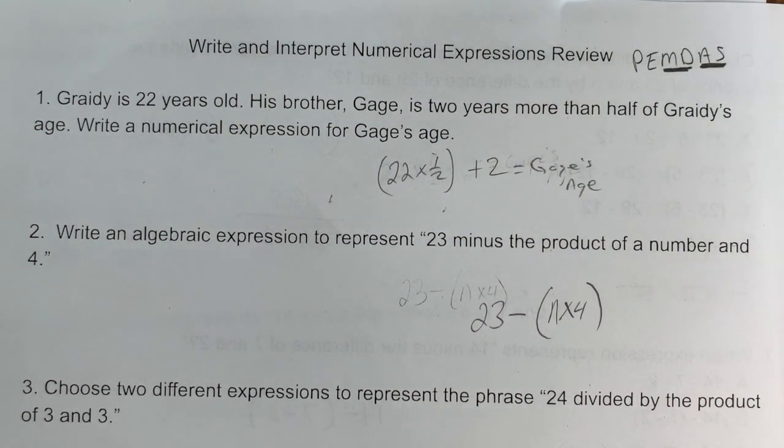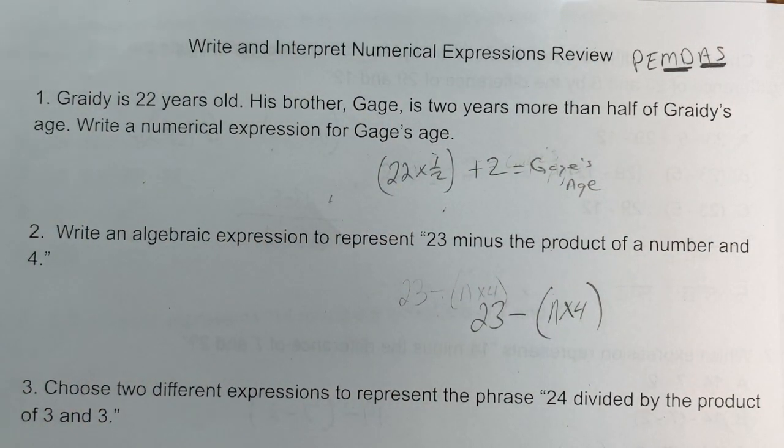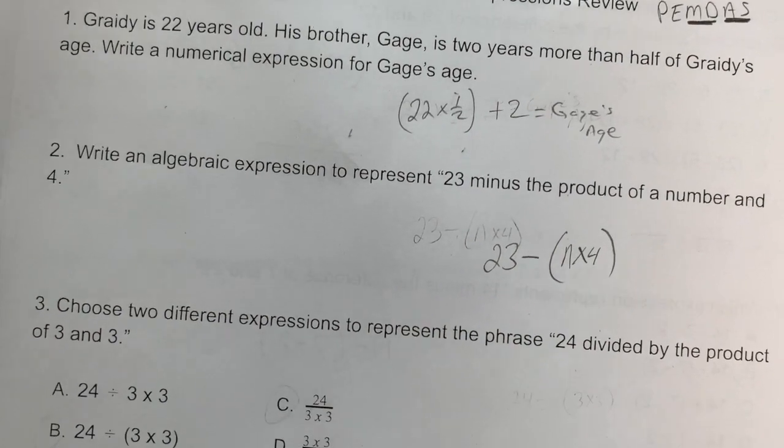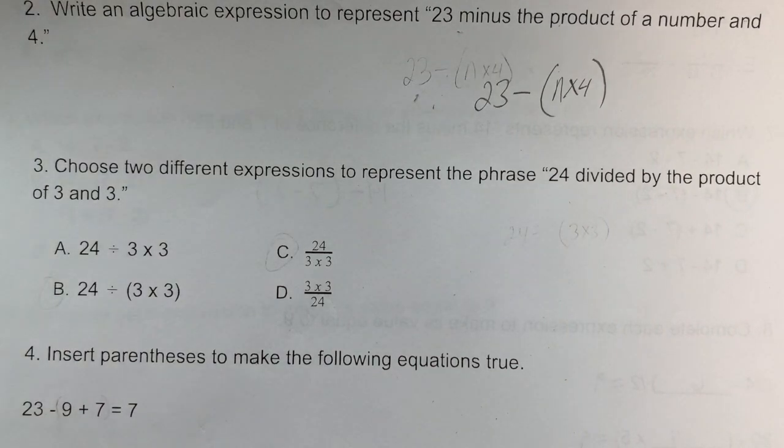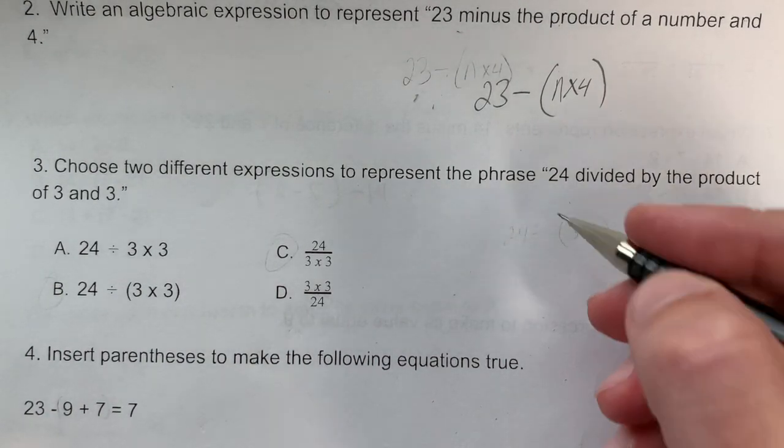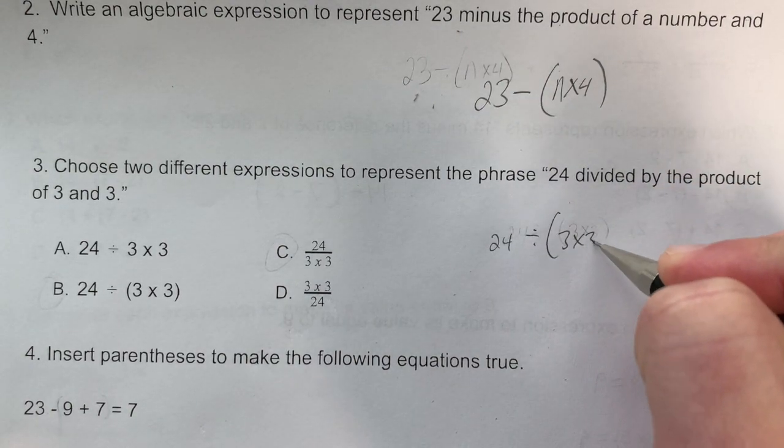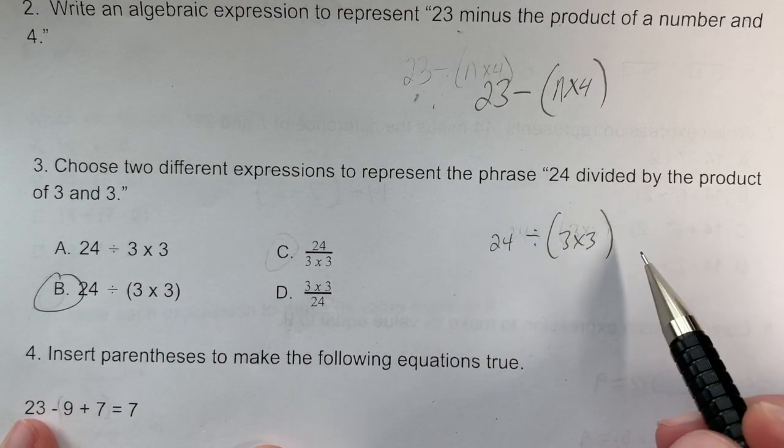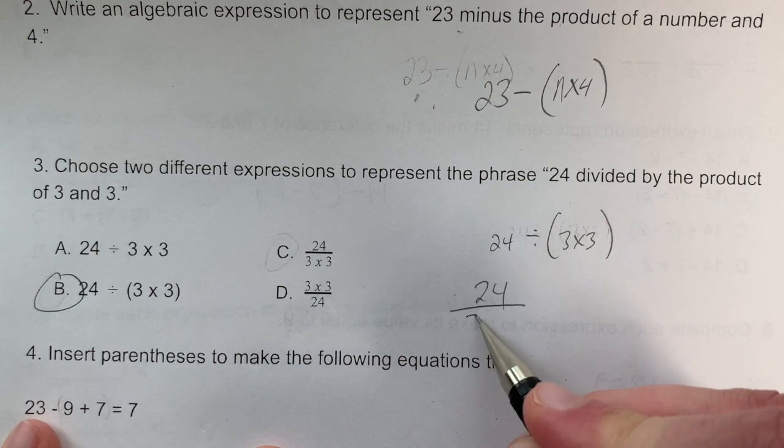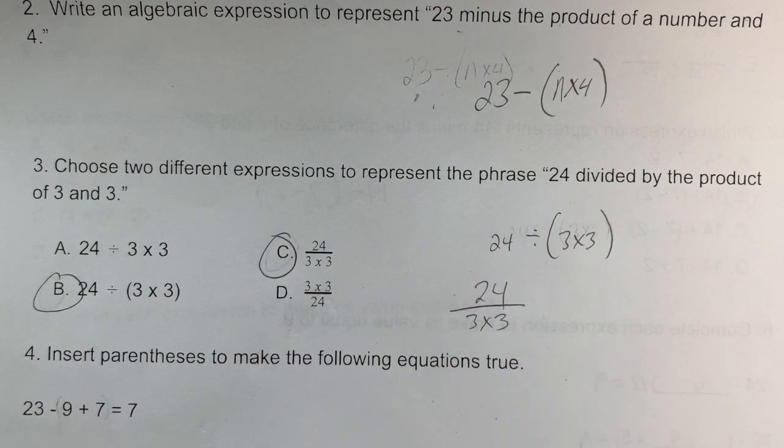Problem 3: Choose two different expressions for 24 divided by the product of 3 and 3. Answer B works: 24 ÷ (3 × 3). Another way to write division is fraction form, so 24/(3 × 3) gives us answer C as well. This simplifies to 24 divided by 9.